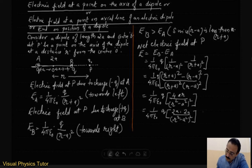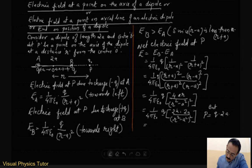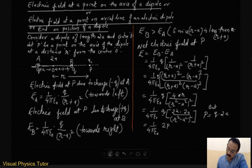We know that the dipole moment P = q × 2a. In this formula we have both q and 2a, so we can replace q × 2a with P. What remains gives us E = (1/4πε₀) × 2Pr / (r²−a²)². If the dipole length is very small, we can neglect a², so the equation becomes E = (1/4πε₀) × 2Pr / r⁴. The r in the numerator cancels with one power of r⁴, giving E = (1/4πε₀) × 2P/r³.